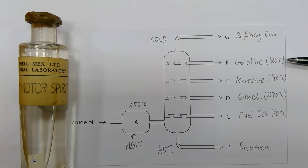The next fraction is called gasoline, also known as motor spirit or petrol. This is widely used as the fuel in car engines. It is a mixture of hydrocarbons with approximately five to ten carbon atoms per molecule and condenses at around 120 degrees Celsius.